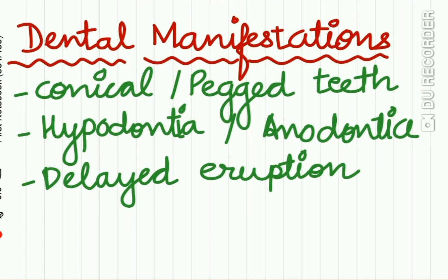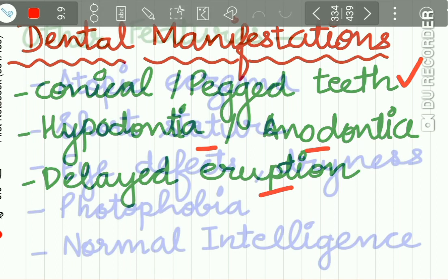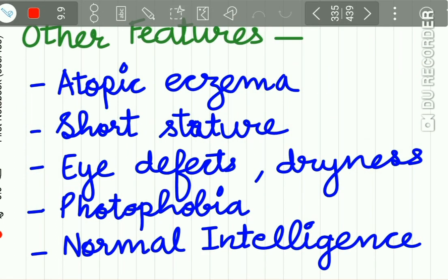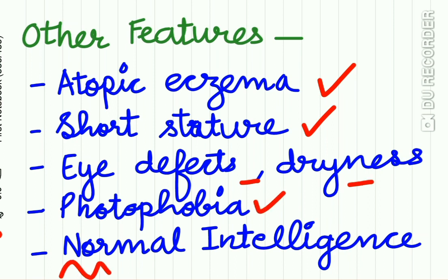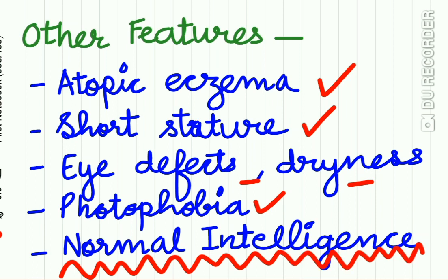Dental manifestations of hypohydrotic ectodermal dysplasia include conical or pegged teeth, hypodontia, anodontia, and delayed eruption of teeth. Other features include atopic eczema, short stature, eye defects, dryness of the eyes, and photophobia. Importantly, the intelligence level of the patient is normal.